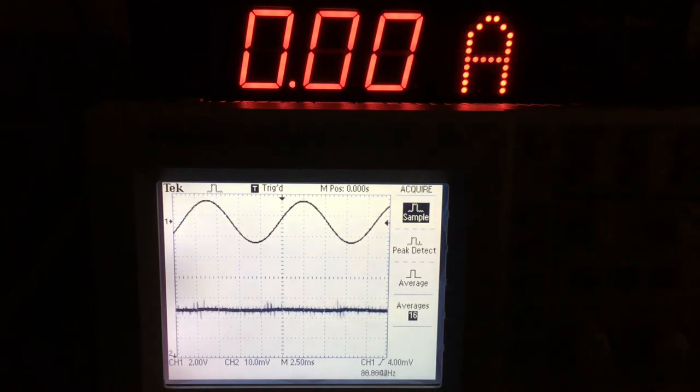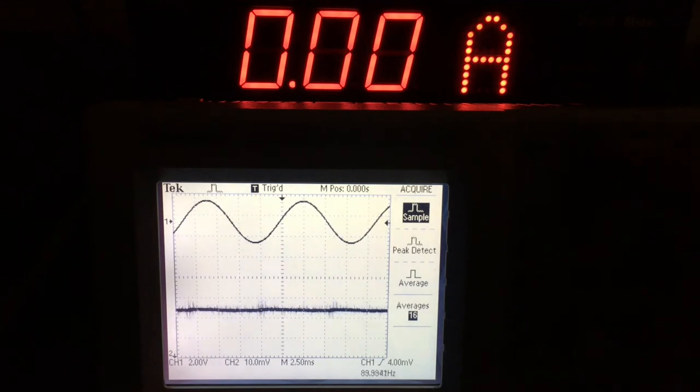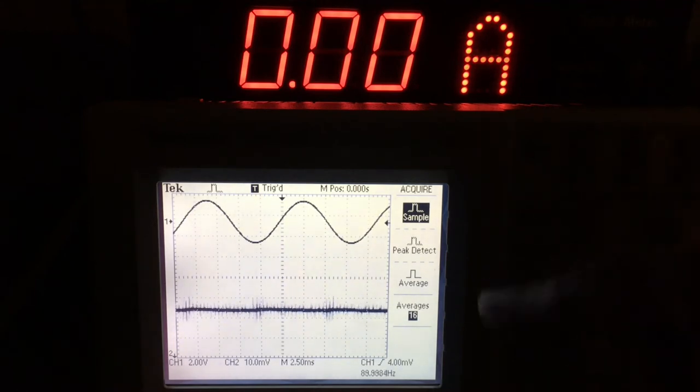Which, here's a stupid oscilloscope trick for you. You can actually average a lot of that stuff out. If you go to the Acquire button up here, this menu pops up.